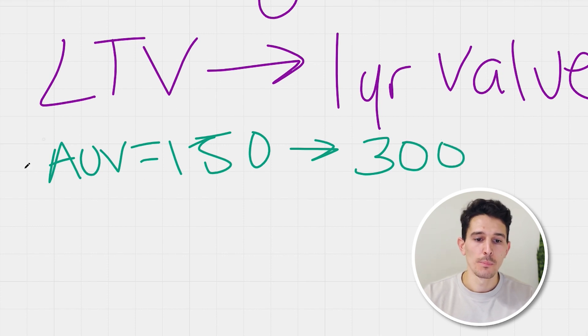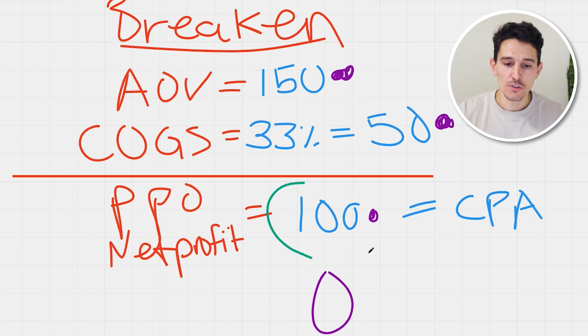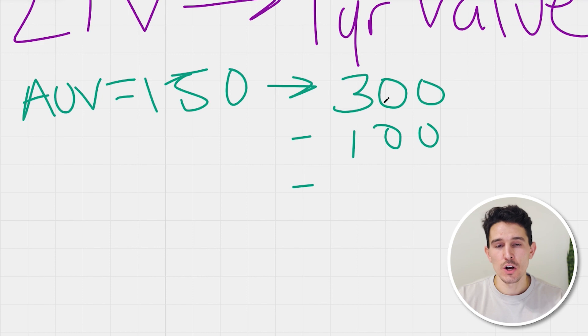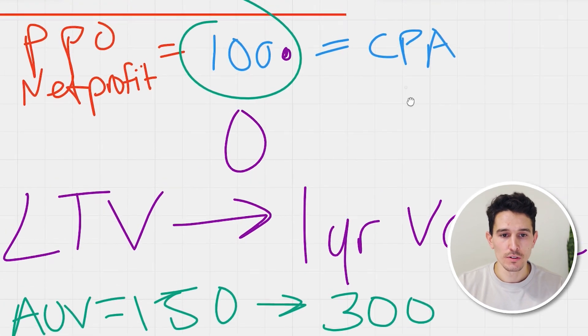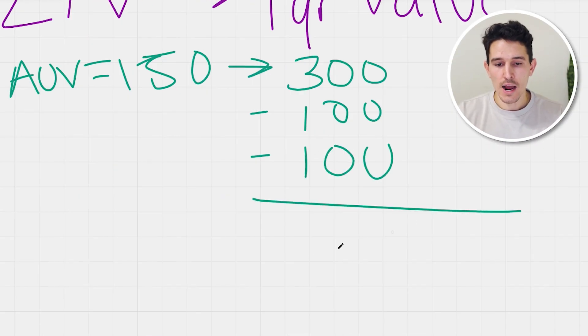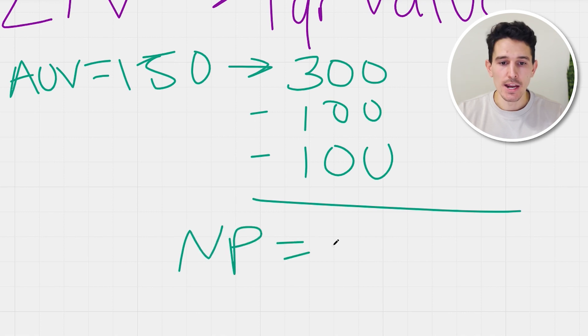So our one-year value on a $150 purchase should equal $300. This means the person that bought $150 worth of goods a year ago will have added an additional $150 in purchases from our store. If we spent $100 to acquire this customer, that's worth $300 in total. On this $300, our margin is 33%, which is $100 in costs. Now we have net profited a total of $100.